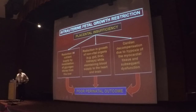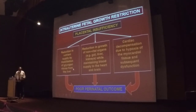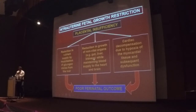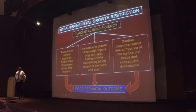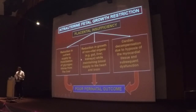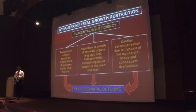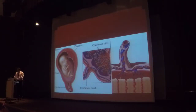Placental insufficiency reduces nutrient supply to the fetus. This mobilizes glycogen from the fetal liver, so the liver stays the same size instead of growing. There is reduction in growth of non-vital organs while blood supply is maintained to the vital organs — the brain, heart, and kidney. There can be cardiac decompensation due to hypoxia, leading to poor perinatal outcome. When there is IUGR, there is risk of poor Apgar score and poor perinatal outcome, so we must detect this condition early.